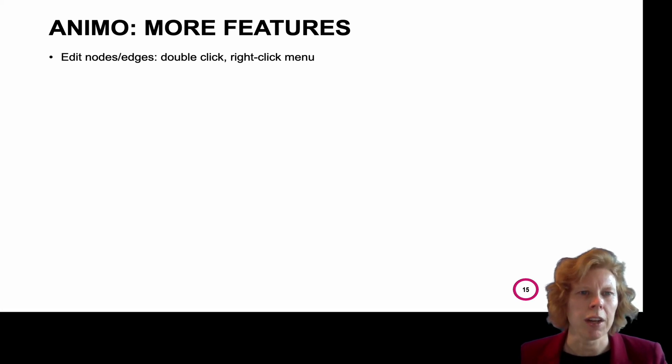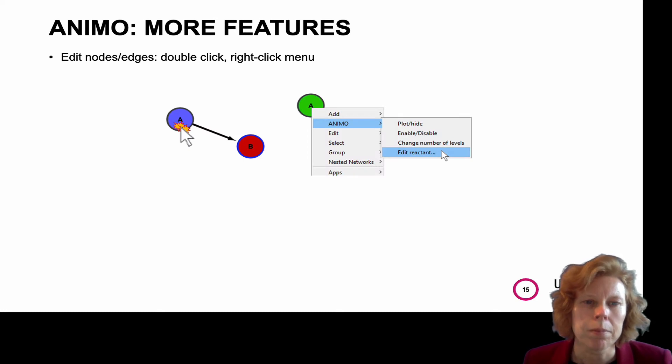Animo has a couple more features that I want to highlight. To edit nodes or edges, you can double click on it or right click to get the menu. So if you right click, you can actually get a menu in which you can choose different things like plotting or hiding or enabling or disabling the node, by which you will not use that node in the simulation anymore. But you also can edit the reactant, which is the same as double clicking on a node.